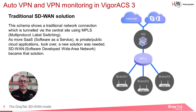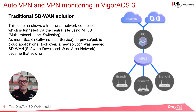Traditionally, most business applications were run on private servers in the head office, and MPLS — that's Multi-Protocol Label Switching — was used to route all traffic to the central site. With the adoption of more and more SaaS and private public cloud applications, we needed new technologies to efficiently and dynamically route different traffic. SD-WAN is the solution, improving on traditional load balancing and failover by focusing on interface and application quality.